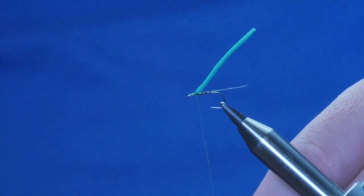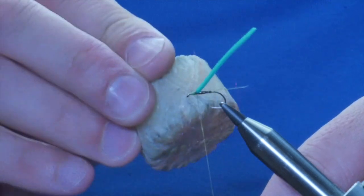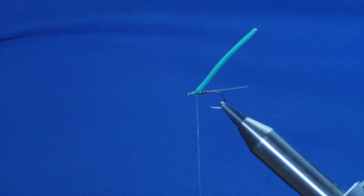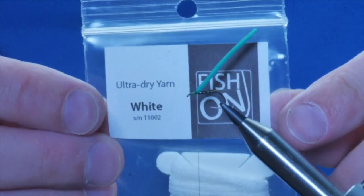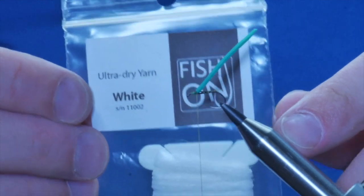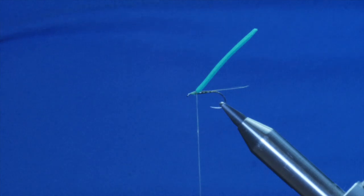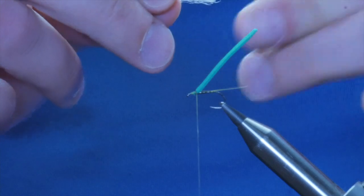And before I do anything else, I'm going to add a little bit of wax to my thread. Because I'm about to tie in my wings. So what I'm going to use for the wings is, in the past, I've often used arrow wing. But I've just bought some of this stuff. It's called Ultra Yarn. And it's from Fishorn. And it comes in different colors. This is the white. And I've cut a small section of this off to form my wing.